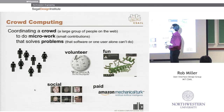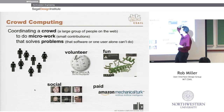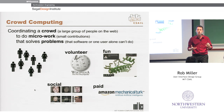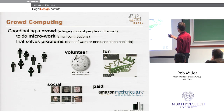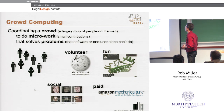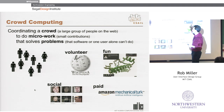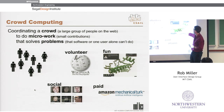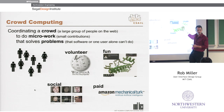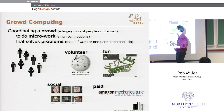Crowd computing is taking a large group of people on the web and getting them to make small contributions — no one person is doing the whole task — but their contributions are coordinated by software to solve problems that we don't know how to do with software or individual users. This group of people can be brought together and motivated in many different ways.